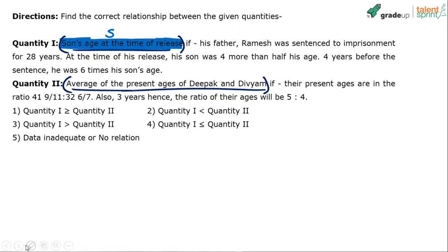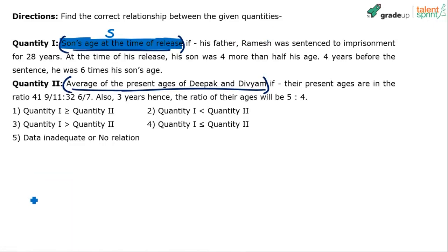S and F are the ages at the time of release. Now, the father — Ramesh — was sentenced to imprisonment for 28 years. At the time of his release, his son was 4 more than half his age.